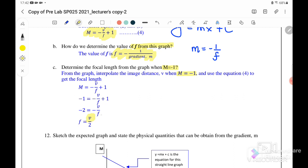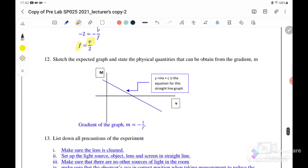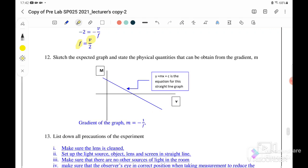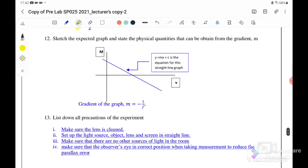Next, sketch the expected graph and state the physical quantities that can be obtained from the graph. So this is the graph where the gradient here is equal to negative 1 over f.